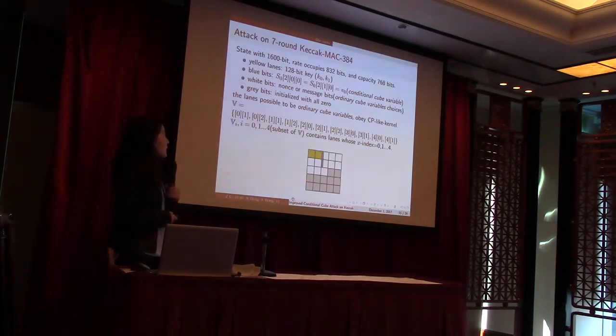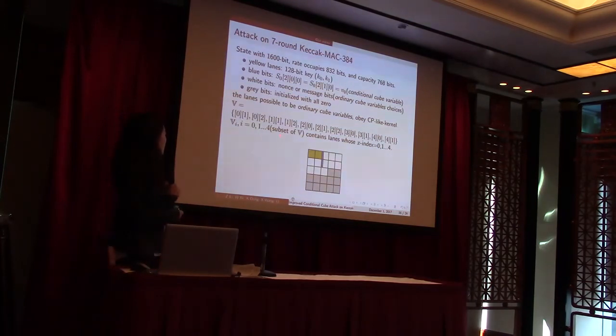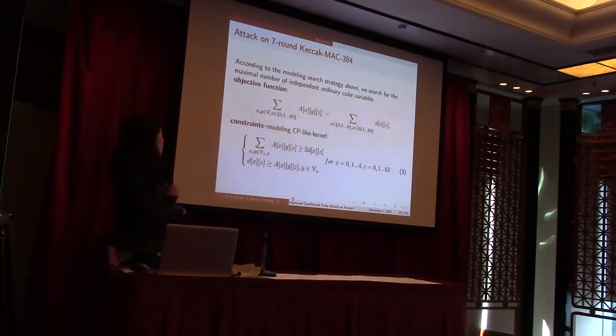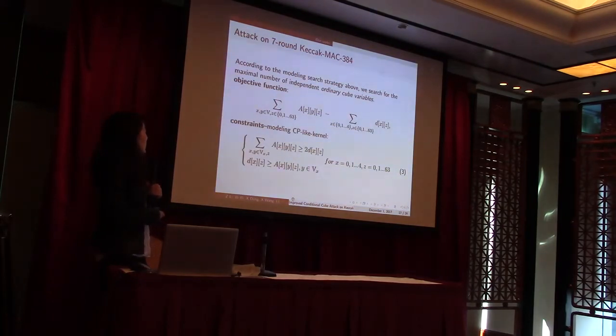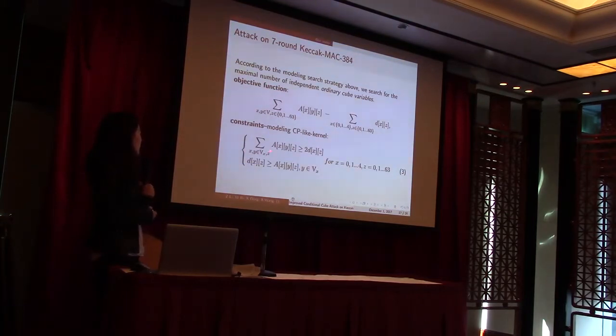This is the application for the above model. The first two lanes are key bits, and these are conditional cube variables. White ones are the space to search for ordinary cube variables. According to the modeling search strategy above, we will search the maximum number of independent ordinary cube variables. This is the objective function. The constraints are added for modeling sticky-like kernel.